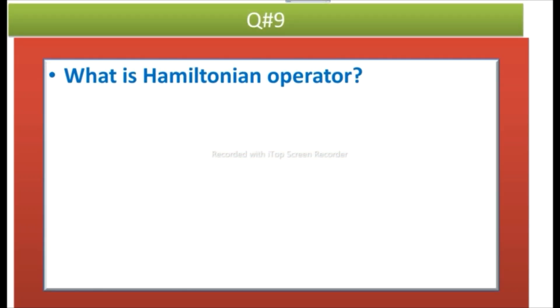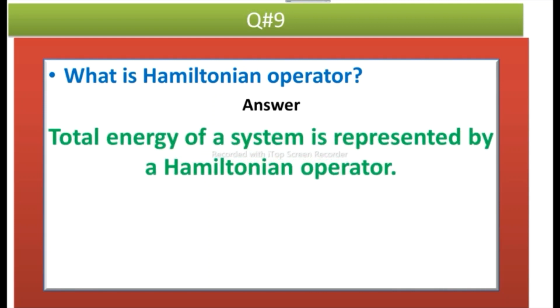Question number nine: What is Hamiltonian operator? Answer: Total energy of a system is represented by a Hamiltonian operator. Total energy means kinetic energy plus potential energy.